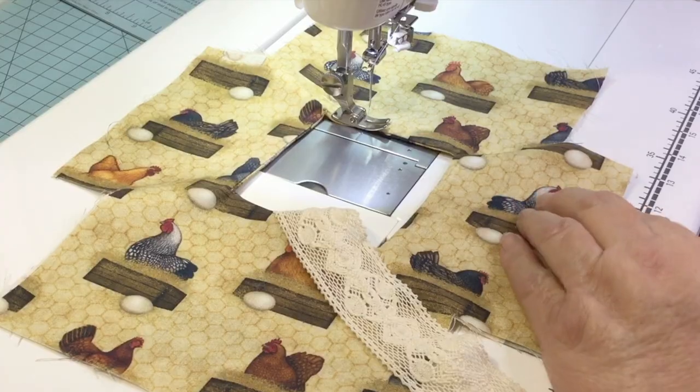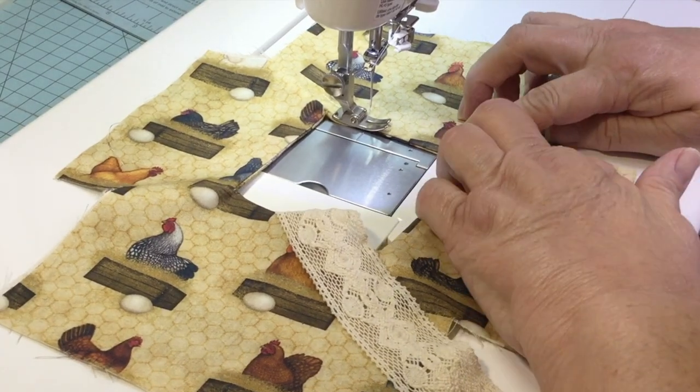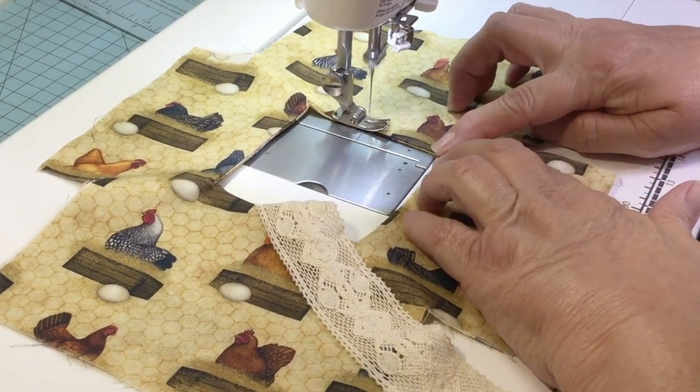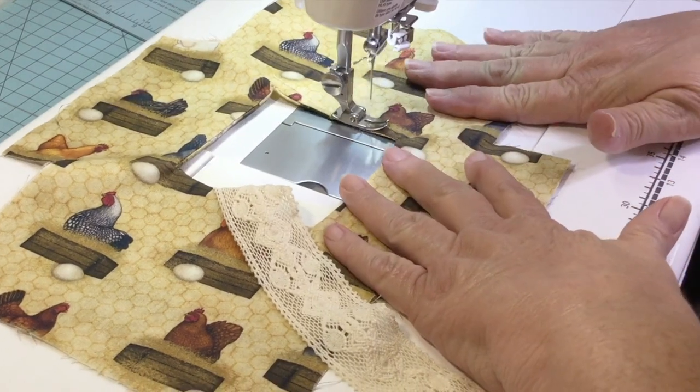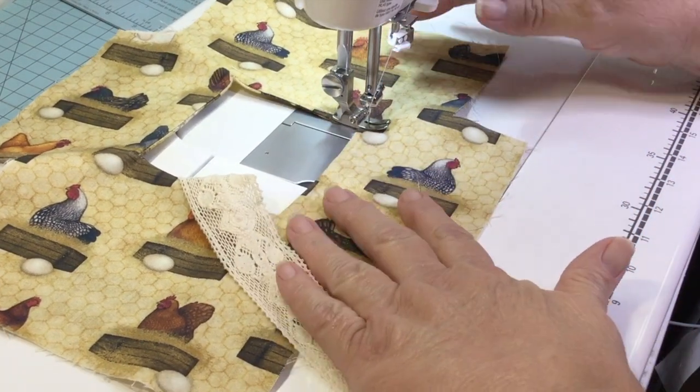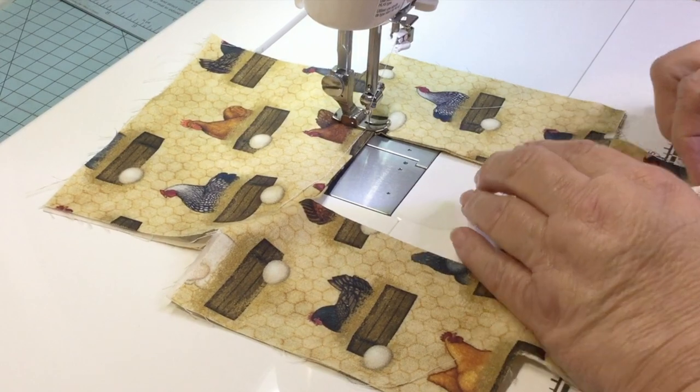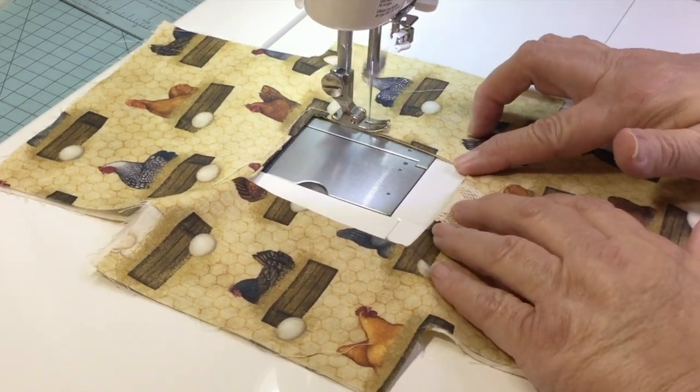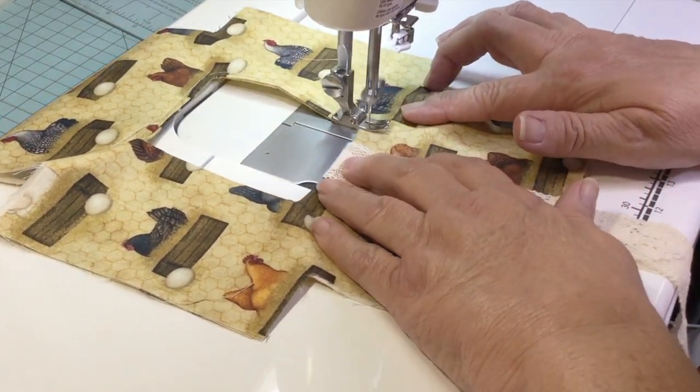Once sewn, trim corners, turn and iron. Then we're going to do a topstitch all the way around the neckline. I also offer my one-of-a-kind tea towel dresses in my Etsy shop and the link's in the description box below.